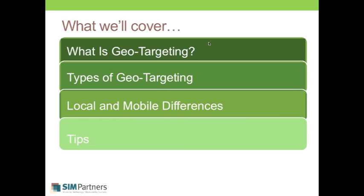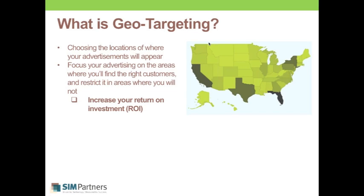So what is geo targeting? What are the major types? Is there a difference between local and mobile? The geo targeting we're speaking about today is done within Google AdWords on the settings tab for campaigns. It allows you to choose locations where your ads will appear, focus your ads in areas where you'll find the right customers, and restrict ads where you're not. The goal is to increase your ROI — geo targeting is essential when you want to make the best use of a limited budget.